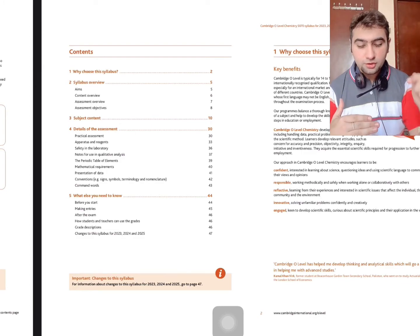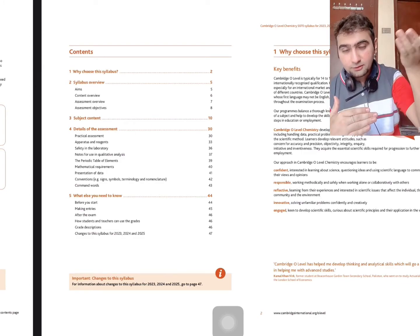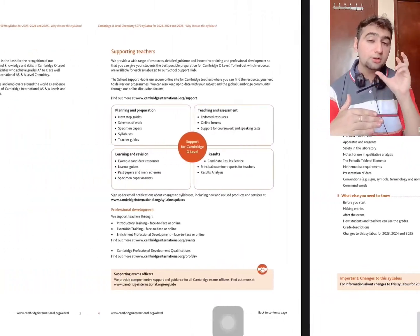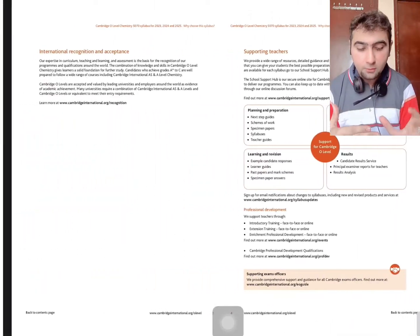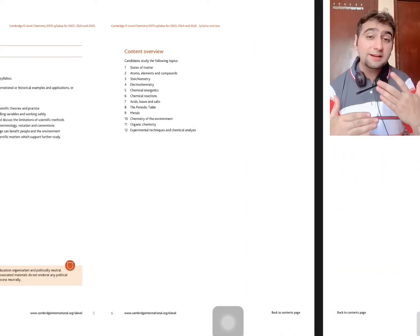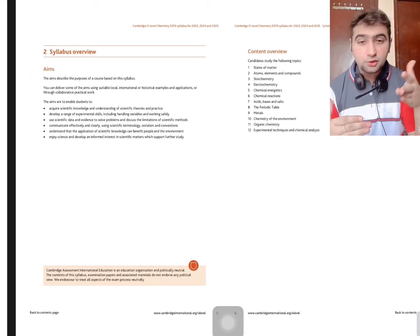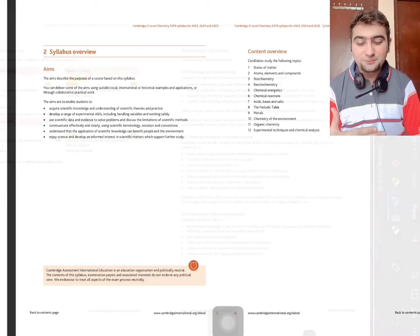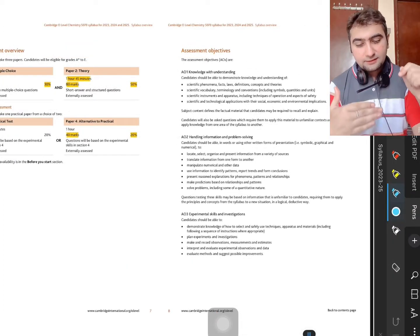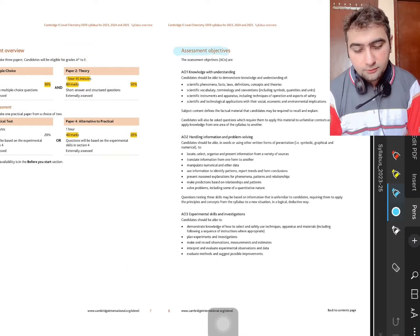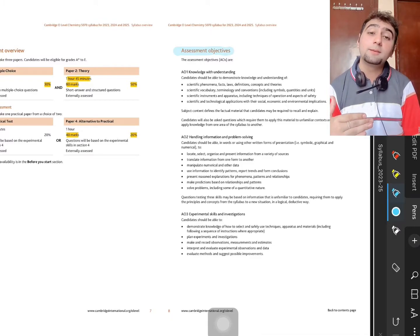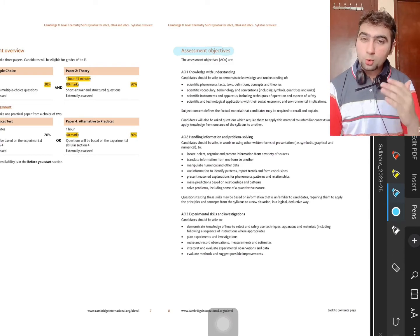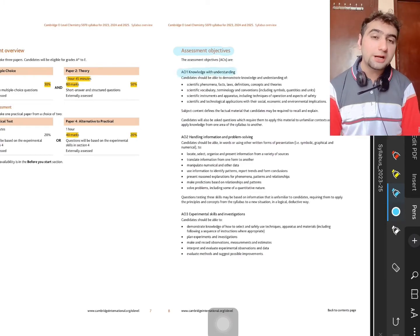You're going to see the syllabus in front of your screens and you're going to be looking at the cover page and some important stuff right now, because we need to find how we can navigate our way through achieving a grade which is acceptable for us. You can see some important stuff over here which is assessment objectives — that is something which we call AO: AO1, AO2, AO3.